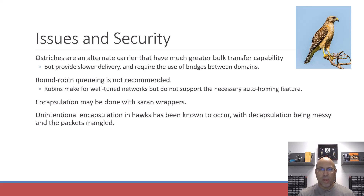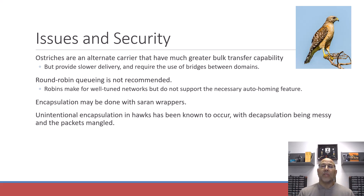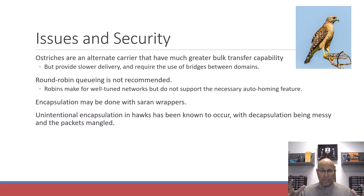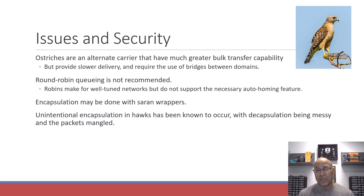Today we don't use a lot of bridges — we prefer switches — but those options required the use of bridges. Round robin queuing was not recommended because robins, while they do make for well-tuned networks, don't support the auto-homing feature of the Avian Carrier. Encapsulation can be done with saran wrappers instead of a standard wrapper, but there is unintentional encapsulation due to hawks in the area, and de-encapsulation can be a bit messy.